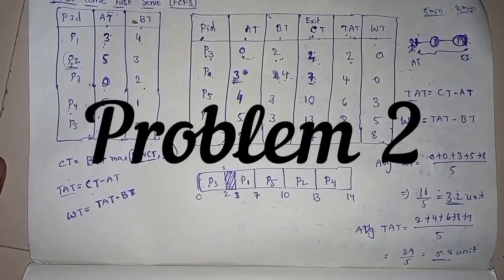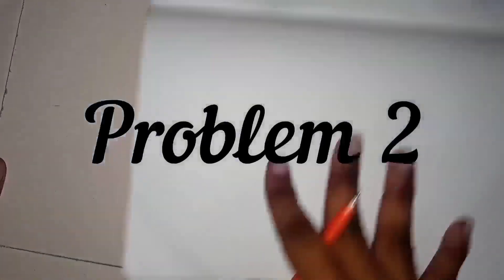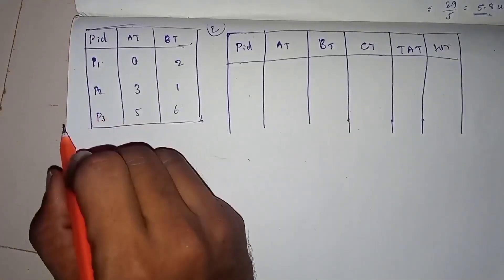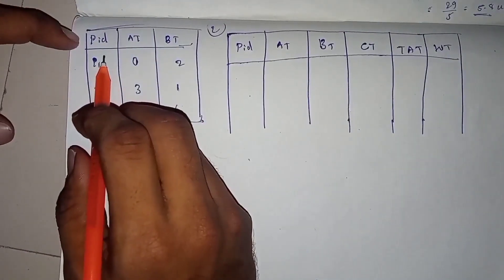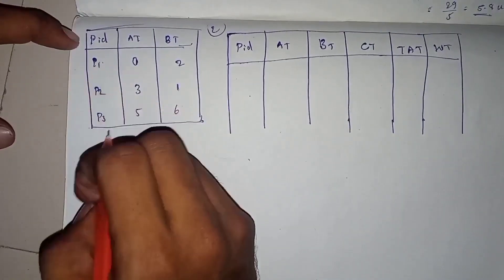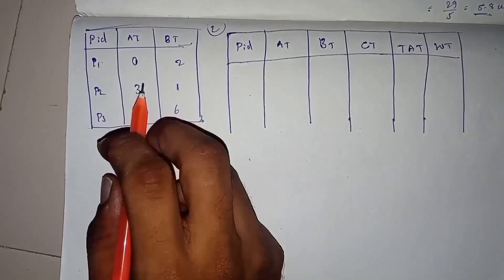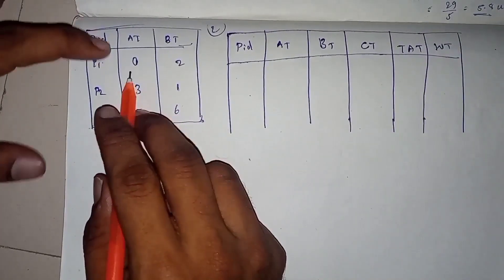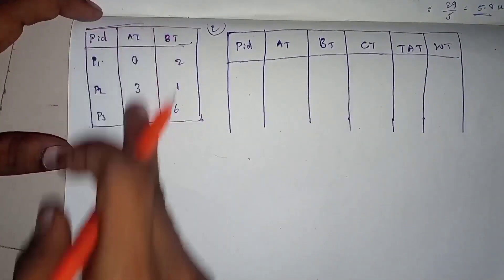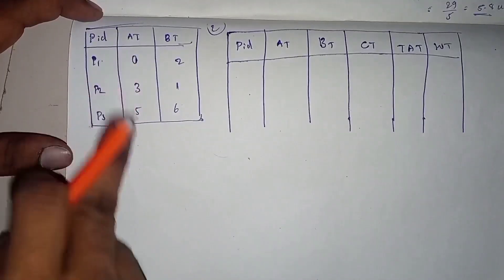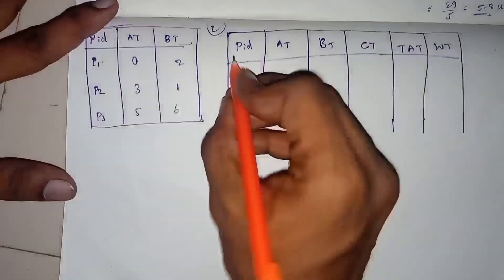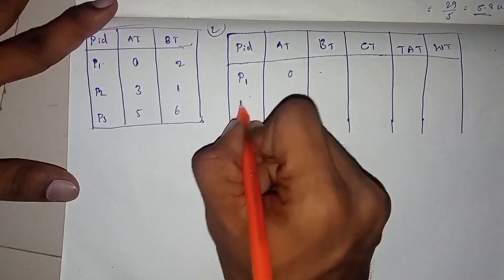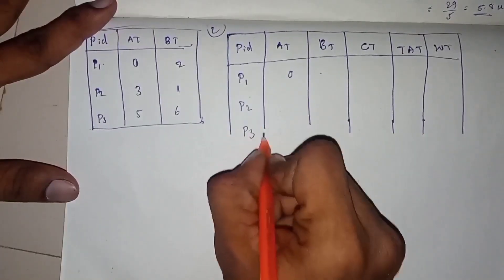We will start the problem. We will start the problem 2. We will start the process. How do we start to get sorted from the code? This code is now 0, 3, 5. We will start to get sorted from the code.